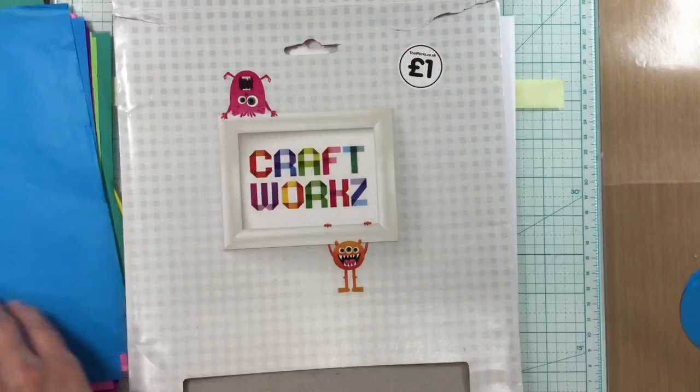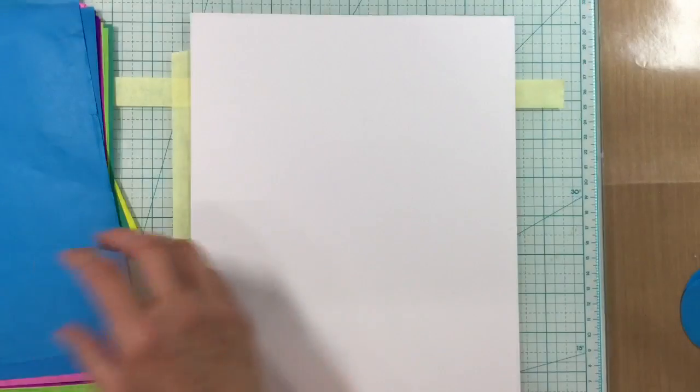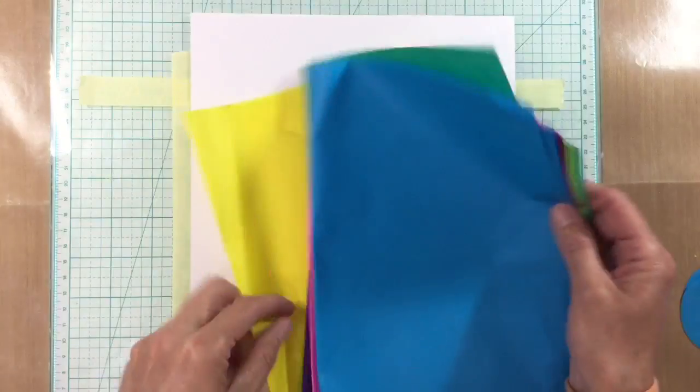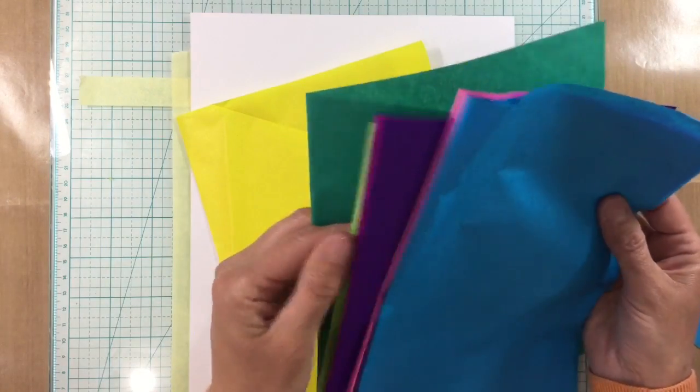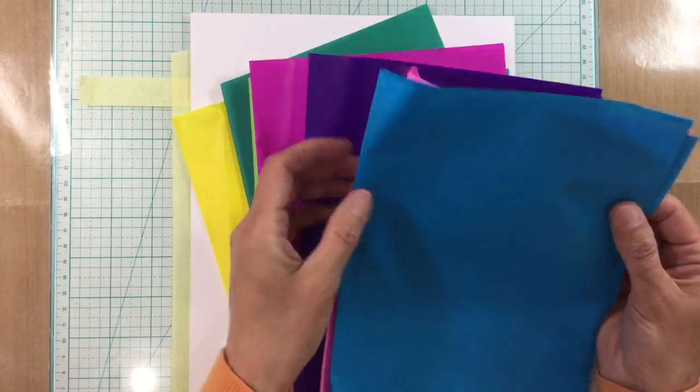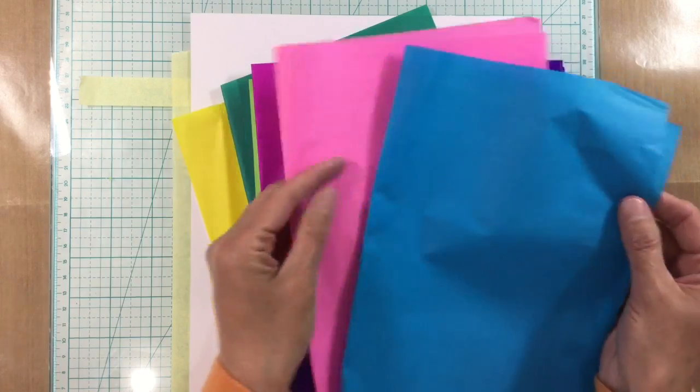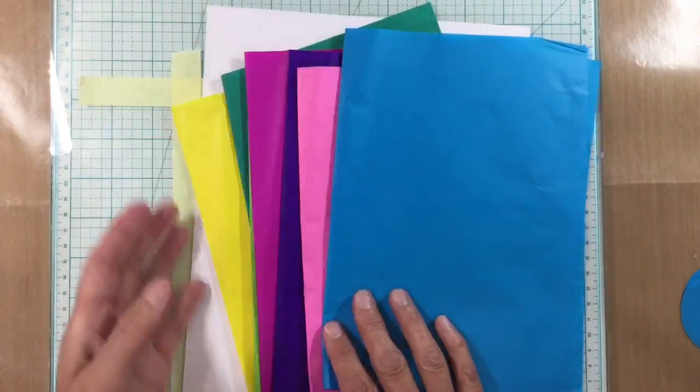I've just pulled out a few. Let me just get rid of that a second. I've decided that I'm going to use yellow, two shades of green, a pink, a purple, well cerise pink, purple, a pale pink and this turquoise here.